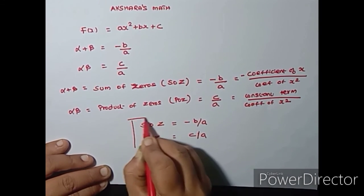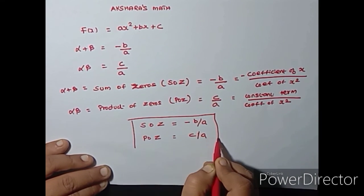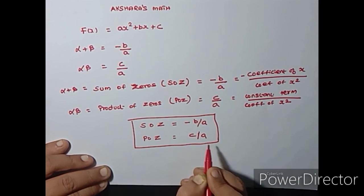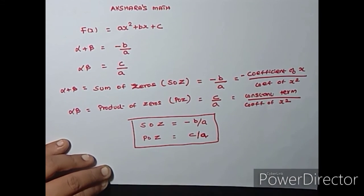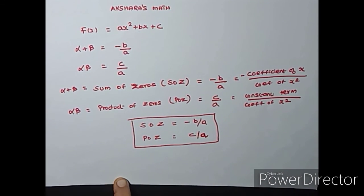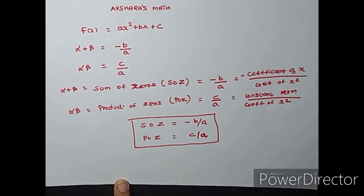In problems, you will be asked to find out and establish this relationship between the zeros. You have to find the zeros of the polynomial, add them, and find the answer. Then using the coefficients you calculate −B/A, and show that both values are equal — that establishes the relationship.